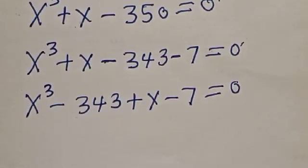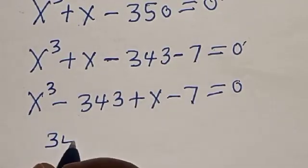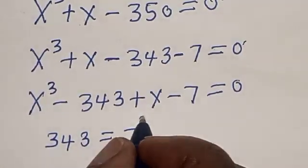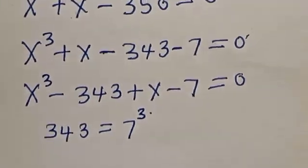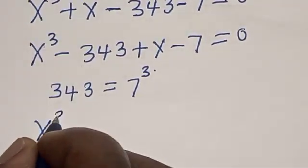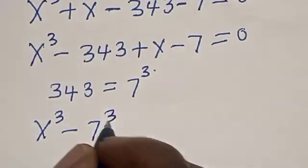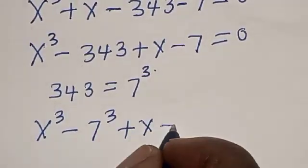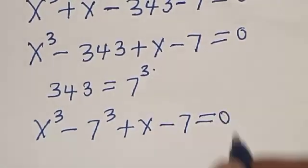Note that 343 is the same thing as 7 raised to power 3. Now replace to get s raised to power 3 minus 7 raised to power 3 plus s minus 7 is equal to 0.